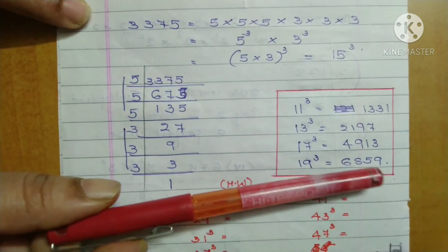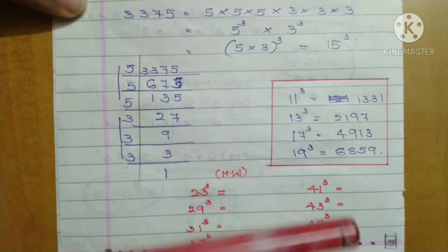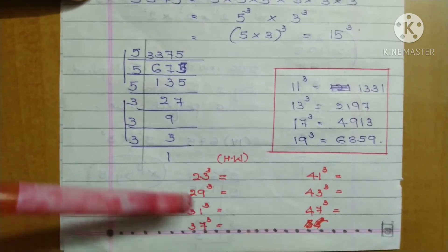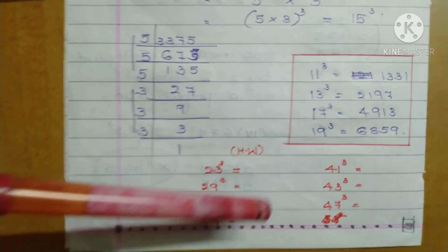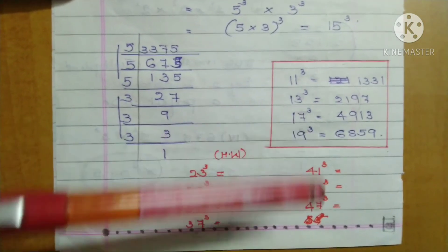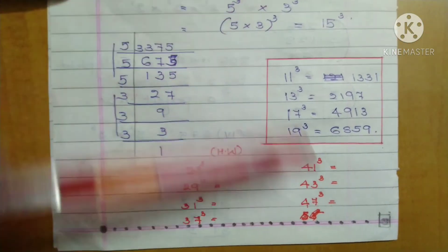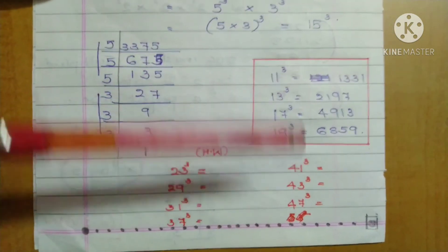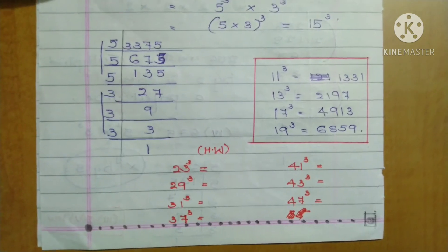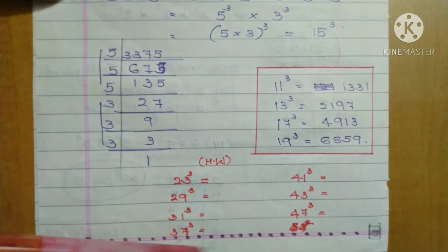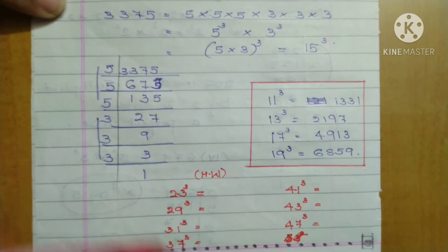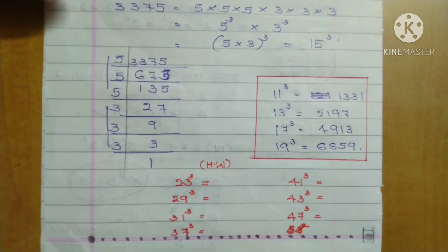You have to memorize these. Find out all prime number cubes less than 50. If you're not memorizing all of them, at least up to 15 is okay, but you must memorize prime number cubes. This is your homework: find the cubes of 11, 13, 17, 19, and other prime numbers, and memorize all of them.